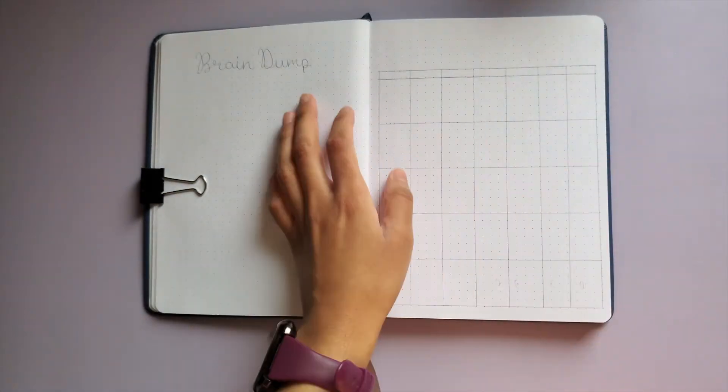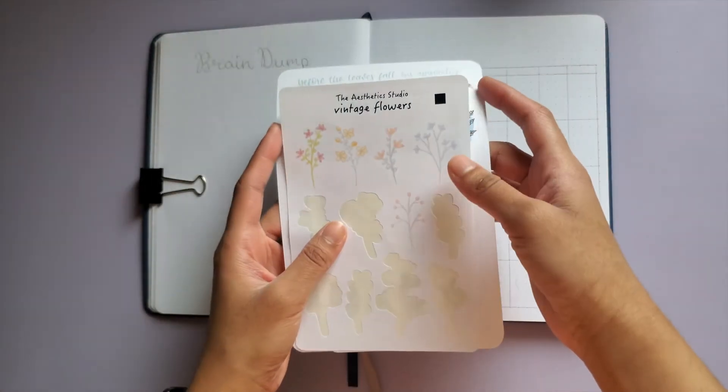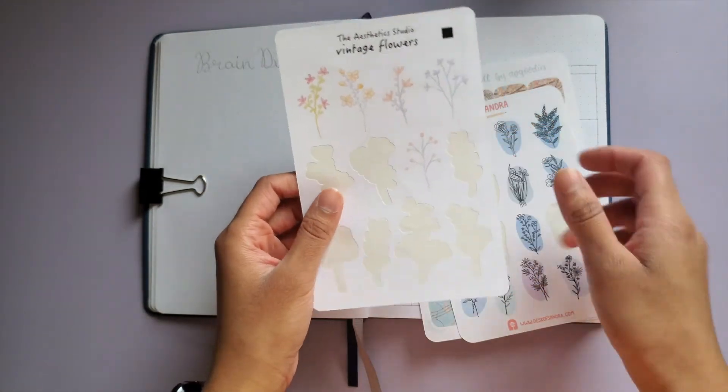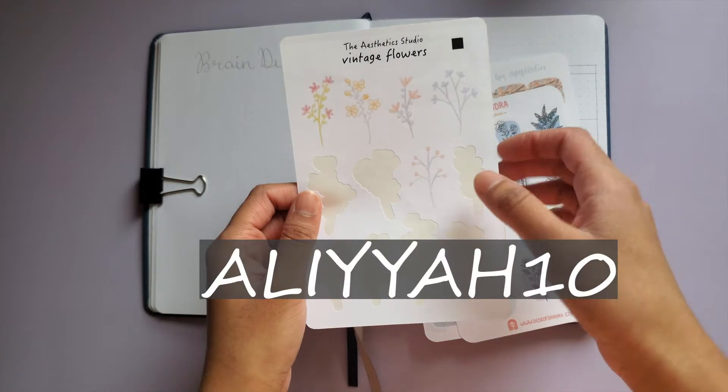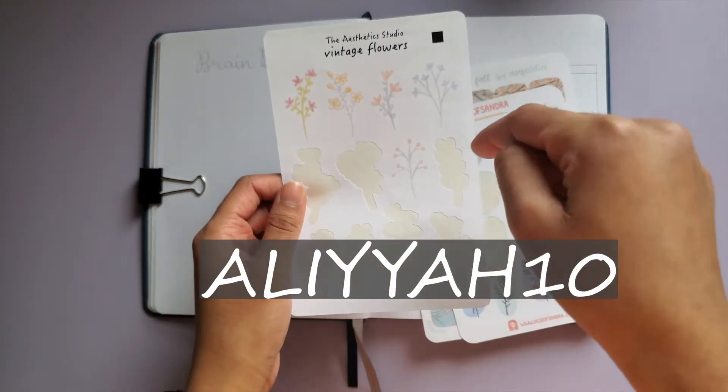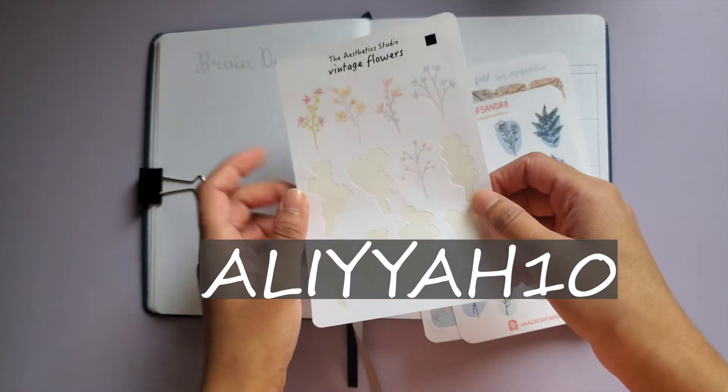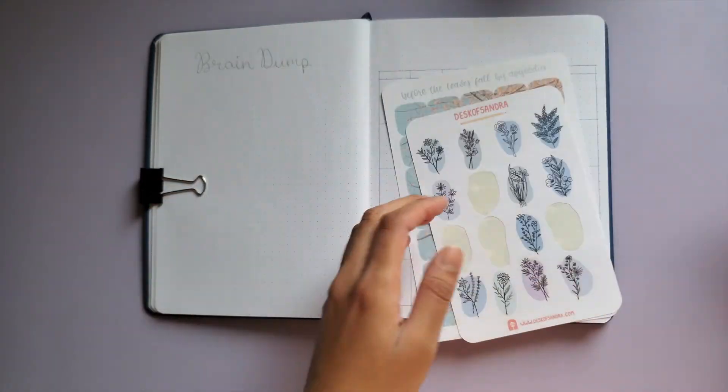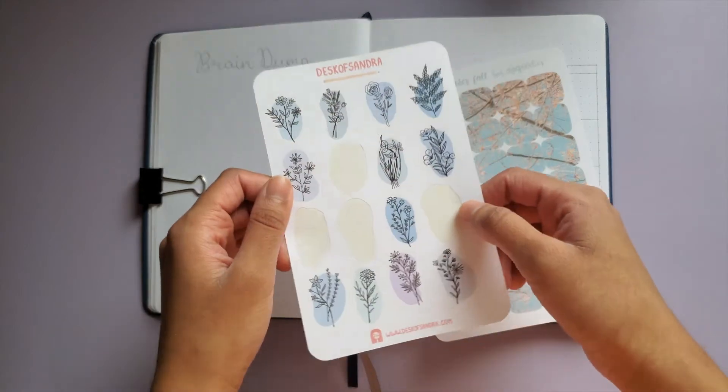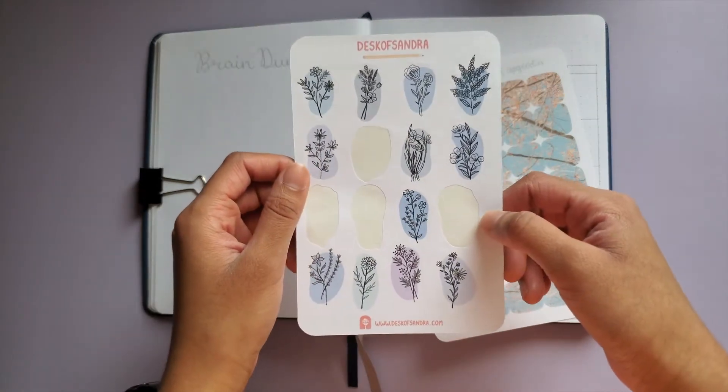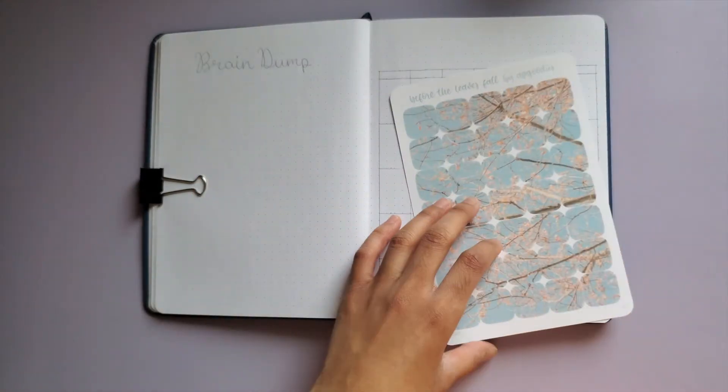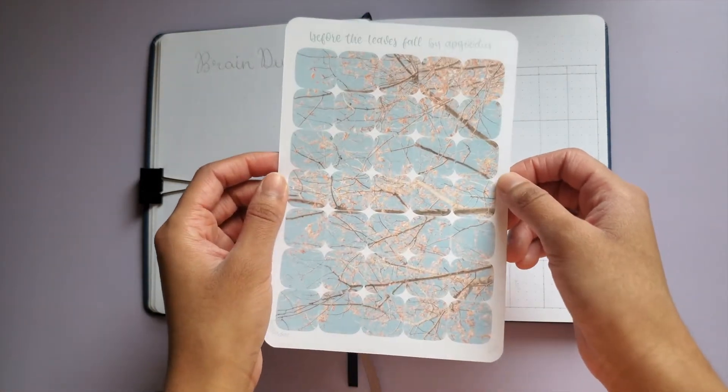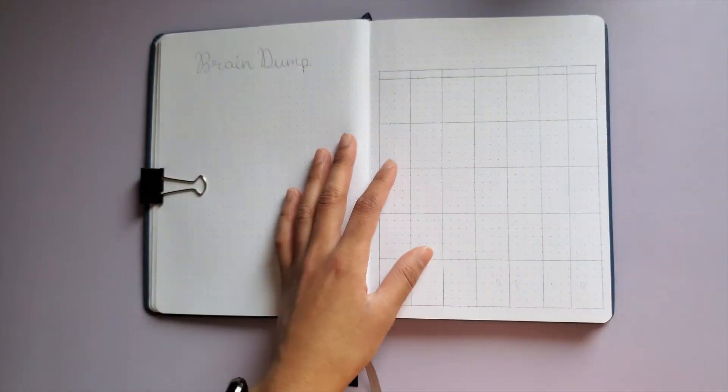For decoration, I'm going to be using these vintage flowers from The Aesthetic Studio. I have a code for her—ALIYYAH10—it'll be on the screen and in the description below. I have this sheet from Desk of Sandra and this sheet from AP Goodies, but unfortunately they don't look like they're open anymore.